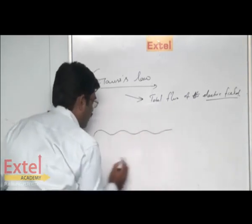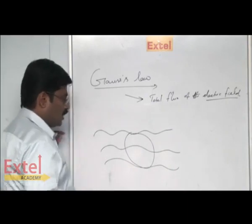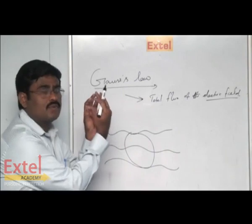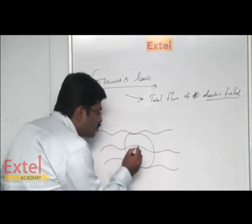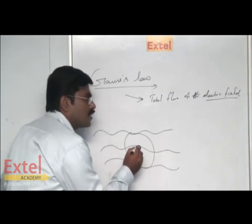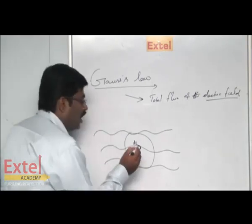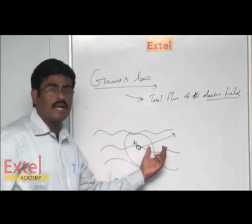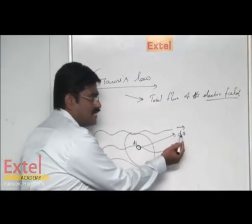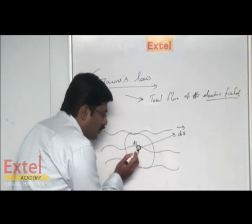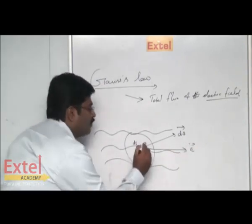Consider a non-uniform electric field. In this field, place a closed surface — imagine it like a football-like structure. On the outer surface of this closed surface, consider a very small surface element dS. To this small surface, if you draw a normal, it can be called an area vector, denoted as the vector dS. The electric field passing through this small area can be understood as a uniform electric field E. The angle between E and dS is theta.